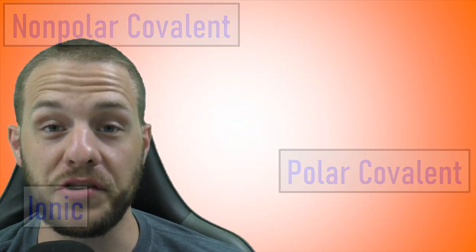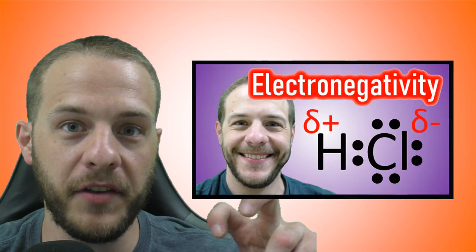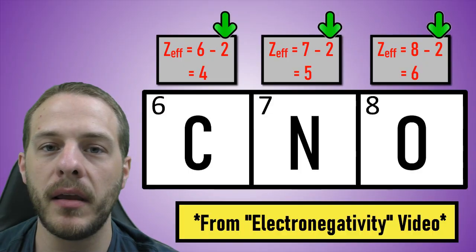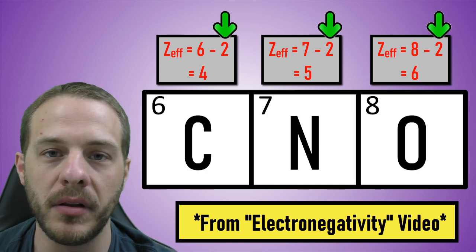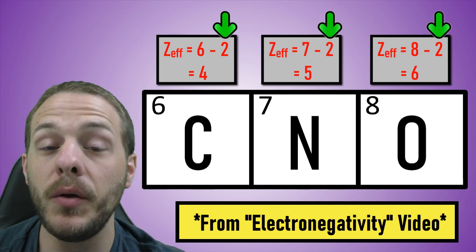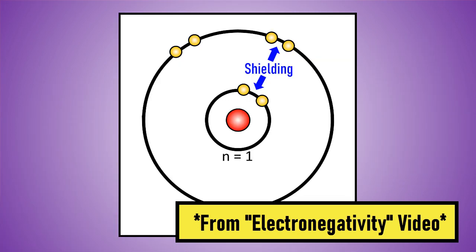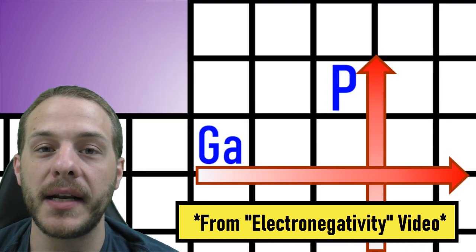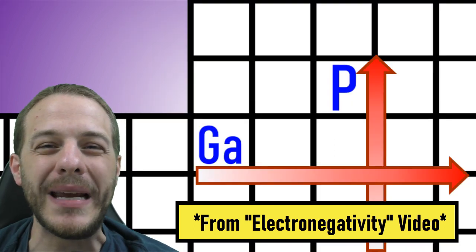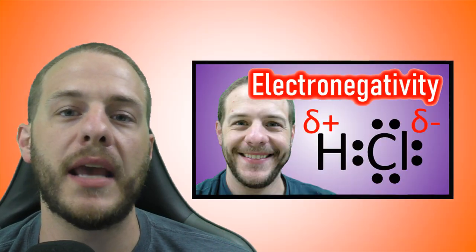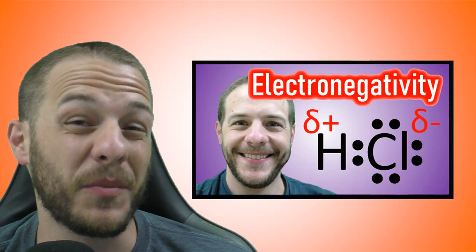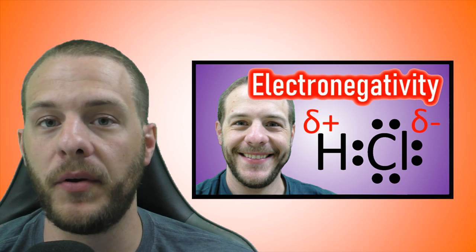In my last educational video called electronegativity, we defined electronegativity, we discussed the phenomena at the atomic level that are responsible for the differences in electronegativity among the elements, and we also observed some general trends in electronegativity in the periodic table — what happens to electronegativity as you travel down a group or from left to right across a period of the periodic table.